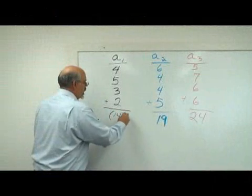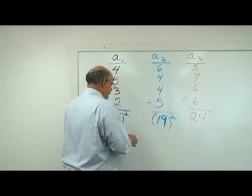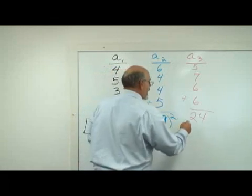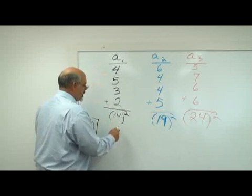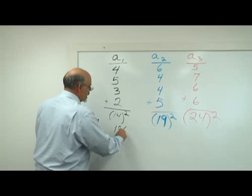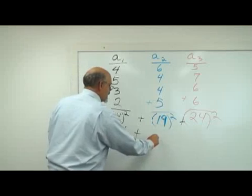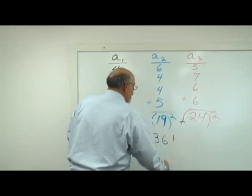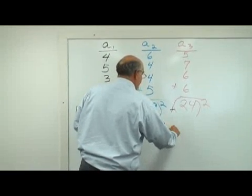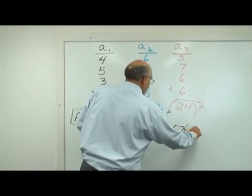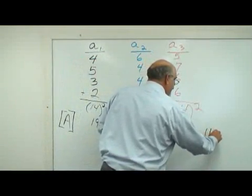Then you square them. It's very methodical. 14 times 14 is 196. You're going to add everything together. 19 times 19 is 361. 24 times 24 is 576. You get a grand total of 1133.